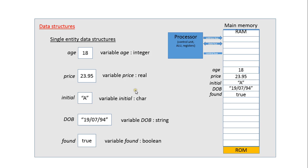The simplest form of data structure is what's called a single entity data structure, and here I've got five examples. Each of them have their own specific name, and in this one I have the value 18, which is called an integer in programming environments, and because this value can change we say that it's variable.